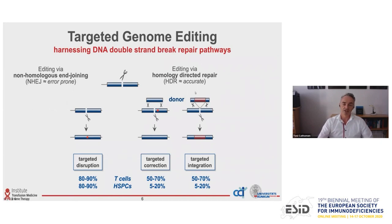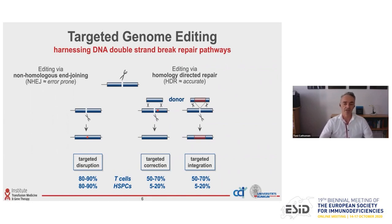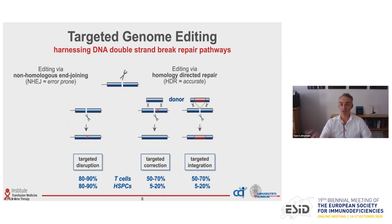Regarding HDR, it really depends what cell type you work in. For T cells, it works quite efficiently as well, with up to 50 to 70% of cells having a targeted integration approach. While in the stem cell compartment, it looks a little bit different, and we are happy if you reach 20% targeted integration in these cells.